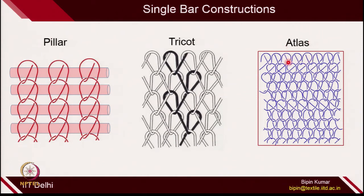The third category of single bar construction was atlas. In atlas, we have seen how a combination of closed loop and open loop is produced in the same structure. All these categories of single bar constructions can also be used in double bar constructions.